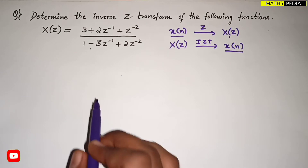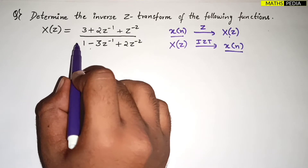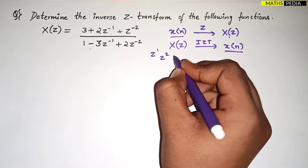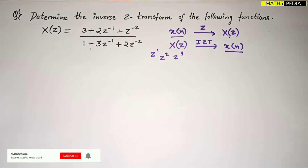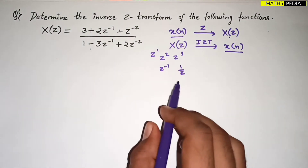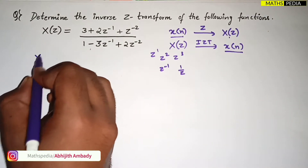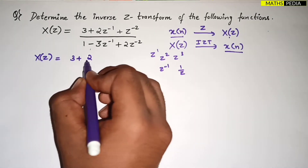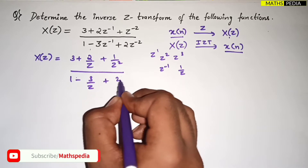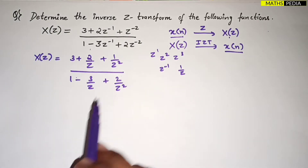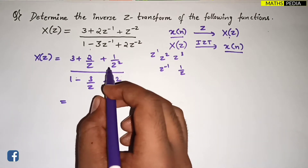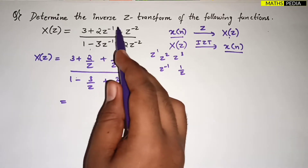For that we have certain steps to follow. The first step is to check whether X(z) is simplified or not. 'Simplified' means the powers should be positive — z^1, z^2, z^3 and so on. Z^(−1) is basically 1/z, so you have to simplify and take the LCM. Whatever negative powers are there, make them positive powers, then take LCM.